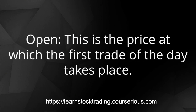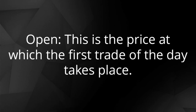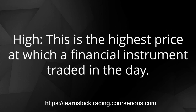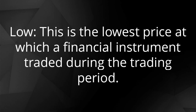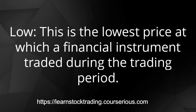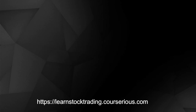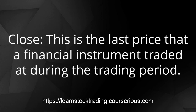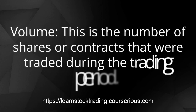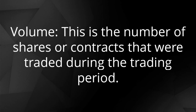Open — this is the price at which the first trade of the day takes place. High — this is the highest price at which a financial instrument traded in the day. Low — this is the lowest price at which a financial instrument traded during the trading period. Close — this is the last price that a financial instrument traded at during the trading period. Volume — this is the number of shares or contracts that were traded during the trading period.